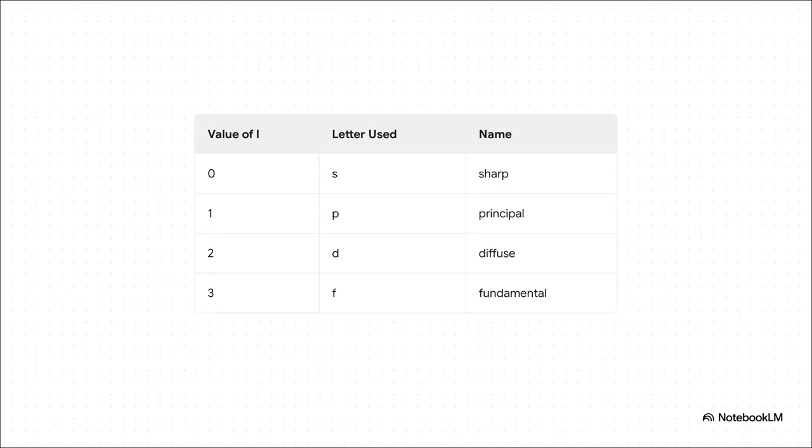Now, to keep from getting all these numbers mixed up, scientists gave letters to the L values. So, an L of 0 is called an s orbital, an L of 1 is a p orbital, and so on.